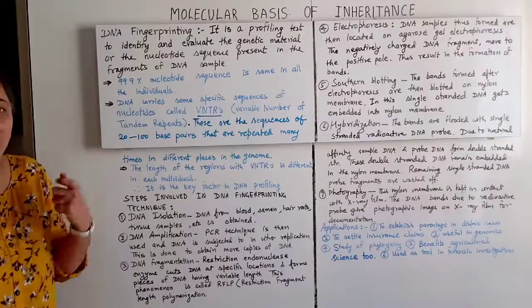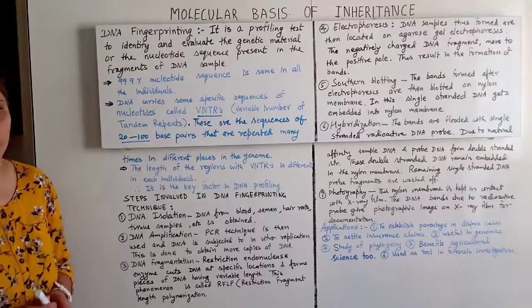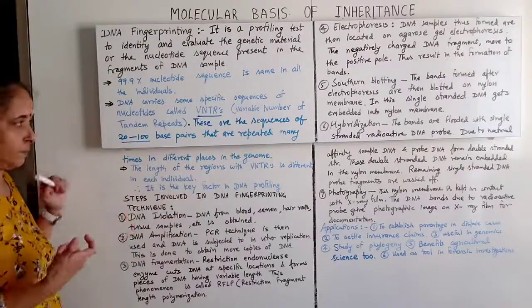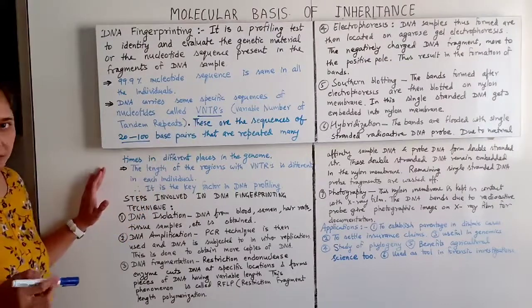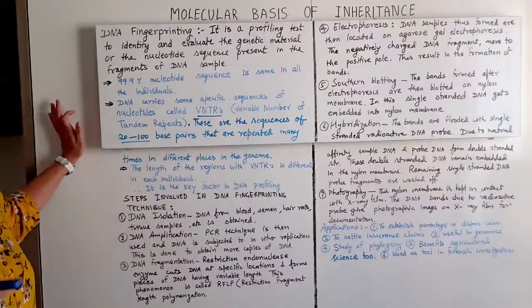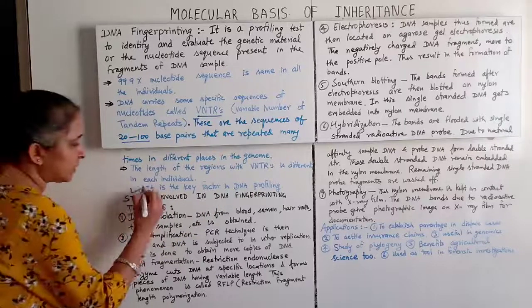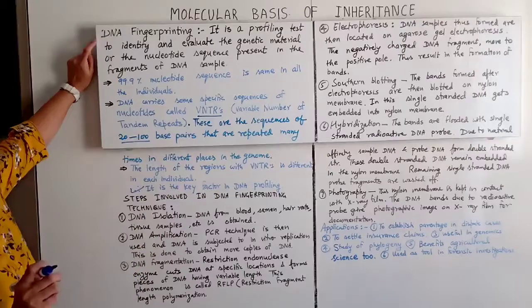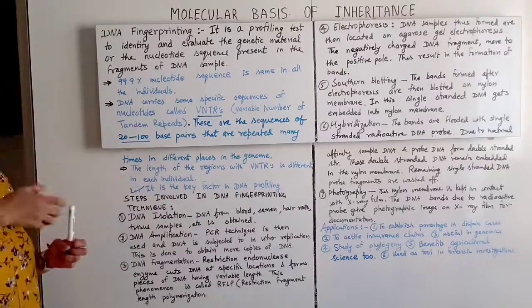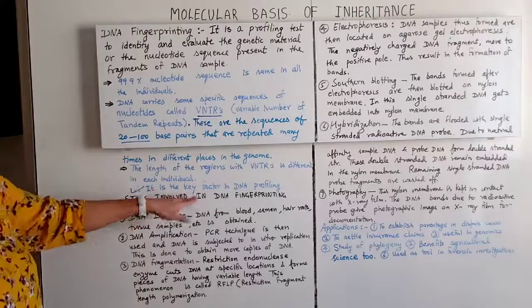VNTRs are sequences of 2 to 200 base pairs that are repeated many times in different places in the genome. The length of the region with VNTRs is different in each individual — this is the main difference. Since the length of VNTRs varies, it is the key factor in DNA profiling. Each individual has a different VNTR length.